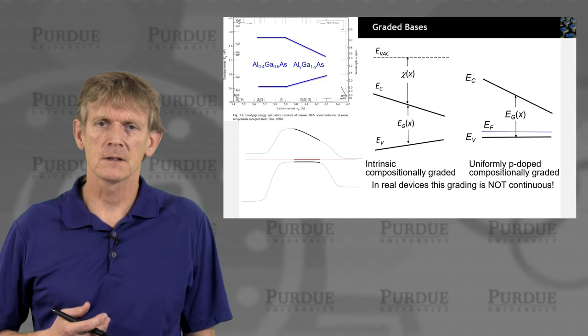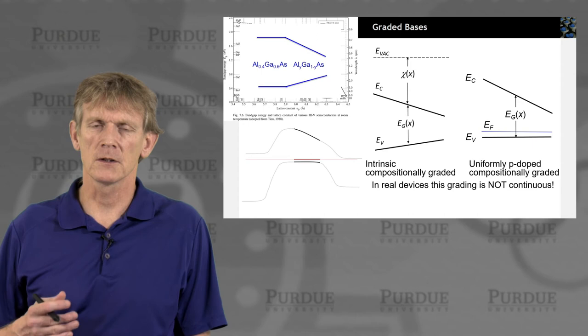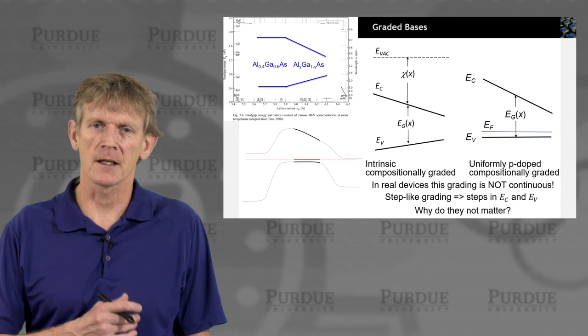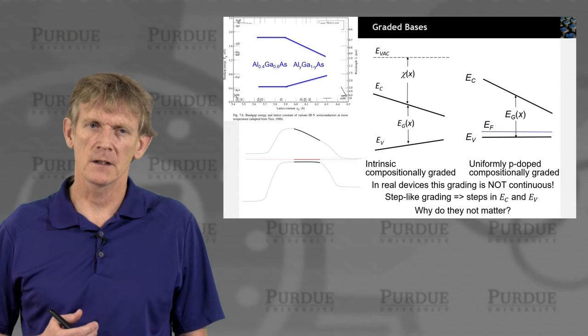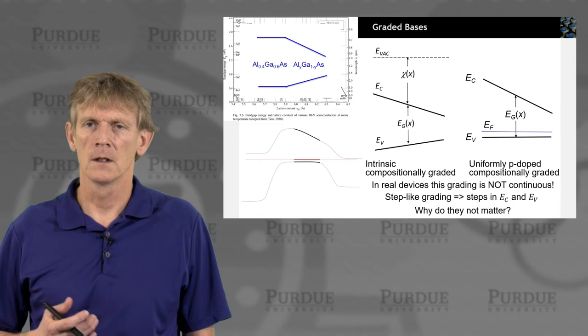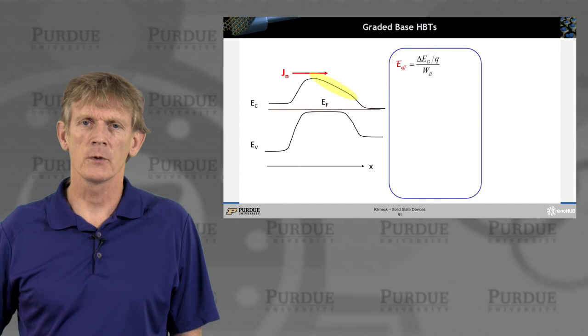Now in a real device the grading may not be quite as continuous. There will be more discretized step-like things. And you can ask yourself, what would that do to the device performance? And I leave that for your critical thinking. Why shouldn't it matter that much? And the point is here, do we care so much what the holes do if we slow them down? And once an electron is on a downramp, do we really care whether there is some nonlinearities? All right, so here we are, we have the graded base HPT.